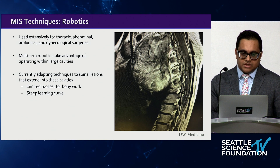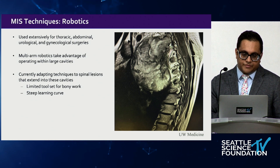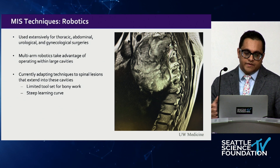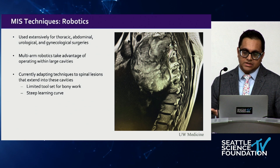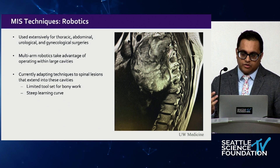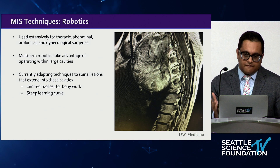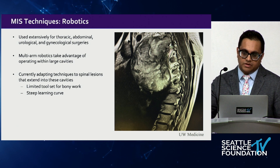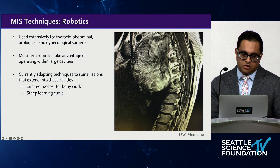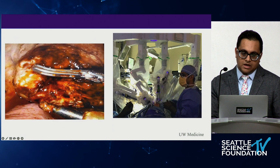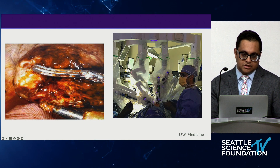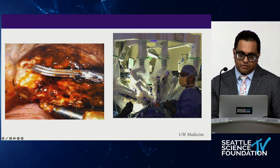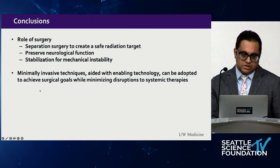Another emerging technique is robotics. The da Vinci robot is used extensively for thoracic and abdominal surgery—areas with a large cavity. We've adapted this for spinal lesions extending into one of these cavities. Disadvantages include limited tool sets for true bony work and a steep learning curve. During my fellowship we performed this in partnership with thoracic surgery colleagues. For a large thoracic tumor, the da Vinci provided beautiful visualization and a beautiful resection was achieved through very small port incisions.